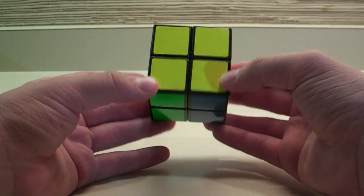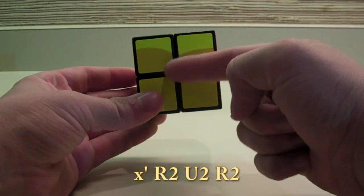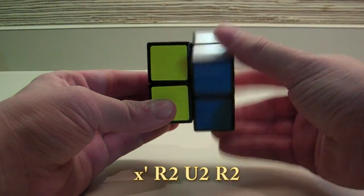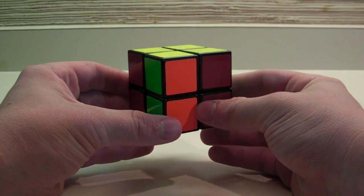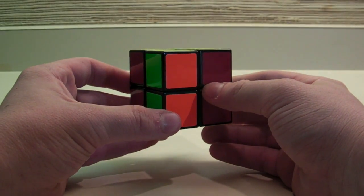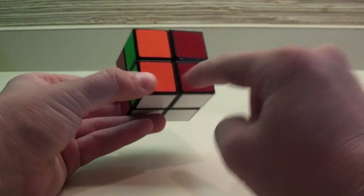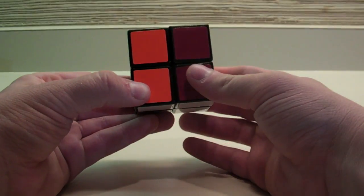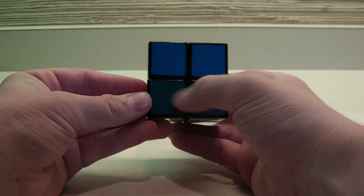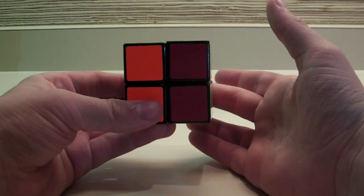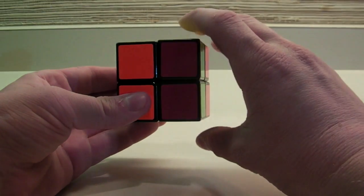All you need to do is do an X' to get the top face in front of you, R2, U2, R2. The second case that you can get is where both layers have two adjacent corners that need to be switched, here and here. You can recognize this case by seeing that there is a full block on the back. You want to hold that block on the back side, and then do the following algorithm.